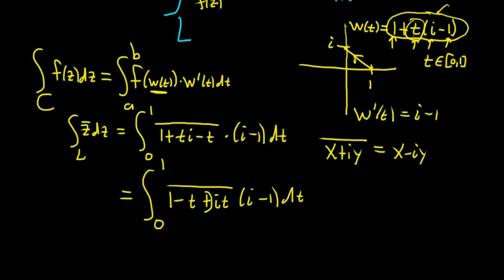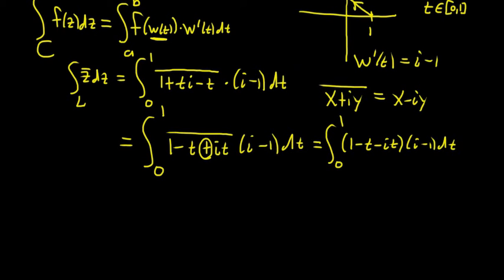So now it's really clear here, you just switch this plus to a minus. This will be equal to the definite integral from 0 to 1. This is 1 minus t minus i t times i minus 1 dt.